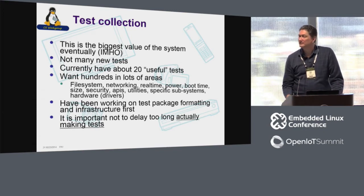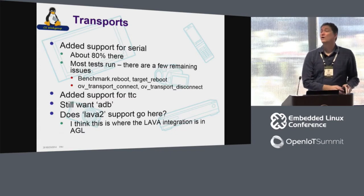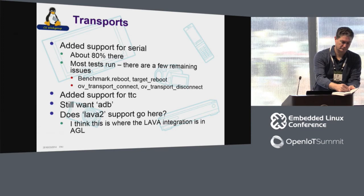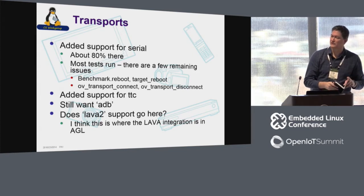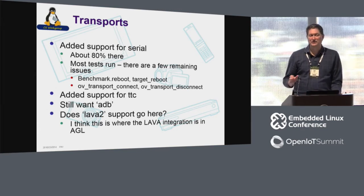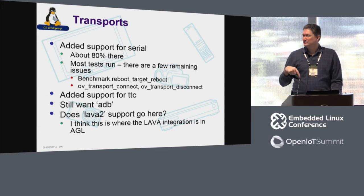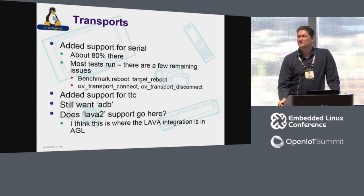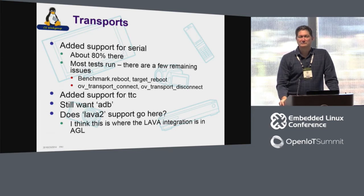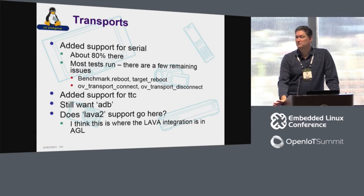The test collection. I think this is one of the most important things — to actually have a whole bunch of tests that people can run. It's shocking that after 25 years of Linux there's not a well-organized collection of tests. There are onesies all over the place: cyclic test is over here, IOzone and Bonnie are over there, and there's nothing organized. We don't have many new tests in Fuego itself — of the 50 tests we have, about 20 of them are actually useful. I would like hundreds of tests. The reason I haven't dug in and fleshed out the list is because I want to get the infrastructure right first — I want to know what the package format is before I make a hundred test packages.